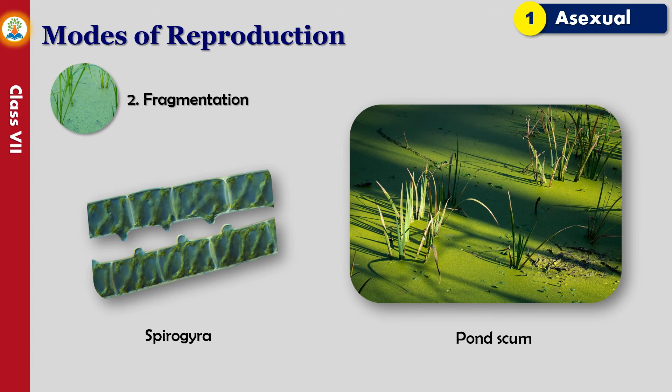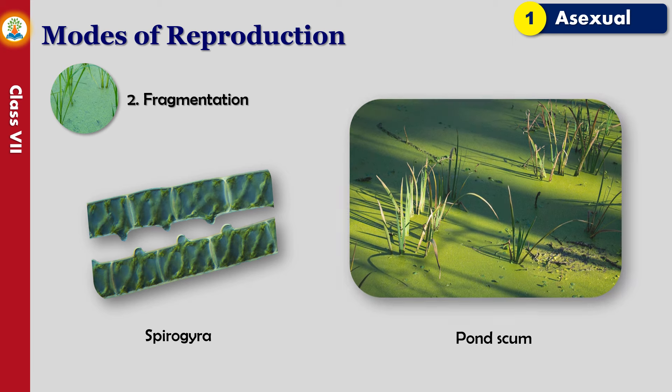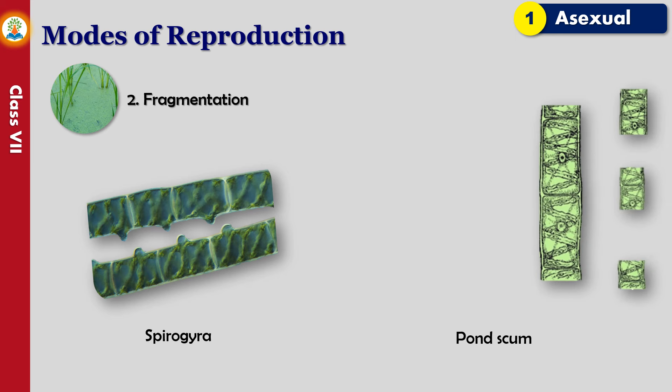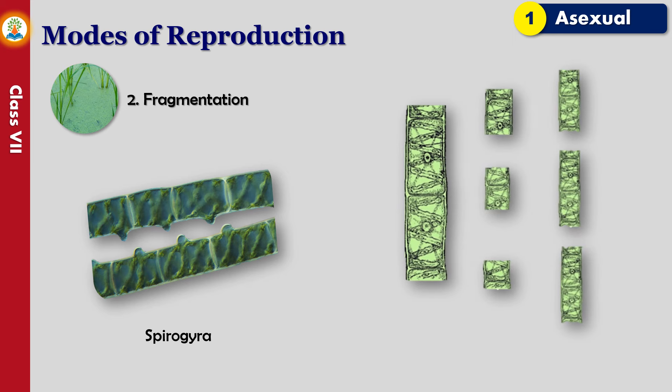In fragmentation, a green alga such as spirogyra grows in water bodies such as ponds. It forms a film on the surface of water called pond scum. It reproduces by breaking its filamentous body into two or more parts. After a certain period of growth, each fragment grows into a new filament. This type of asexual reproduction is called fragmentation.